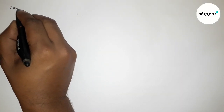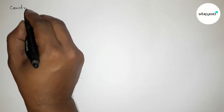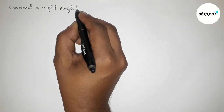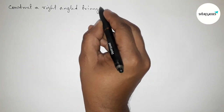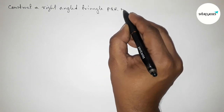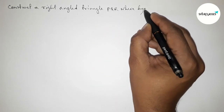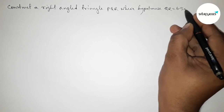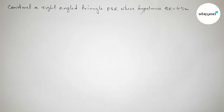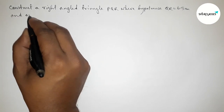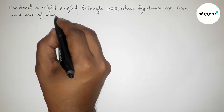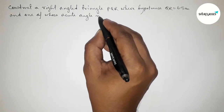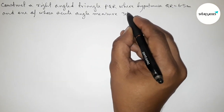Hi everyone, welcome to Essay Share Classes. Today in this video we have to construct a right angle triangle PQR where the hypotenuse QR equals 6.5 centimeters and one of whose acute angles measures 30 degrees. Please watch the video till the end. Let's start.